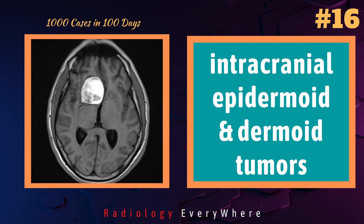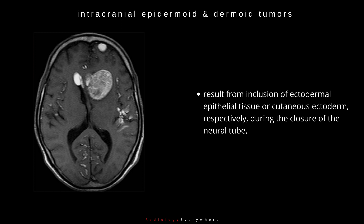In this video, we discuss intracranial epidermoid and dermoid tumours. These result from the inclusion of ectodermal epithelial tissue or cutaneous ectoderm, respectively, during the closure of the neural tube.